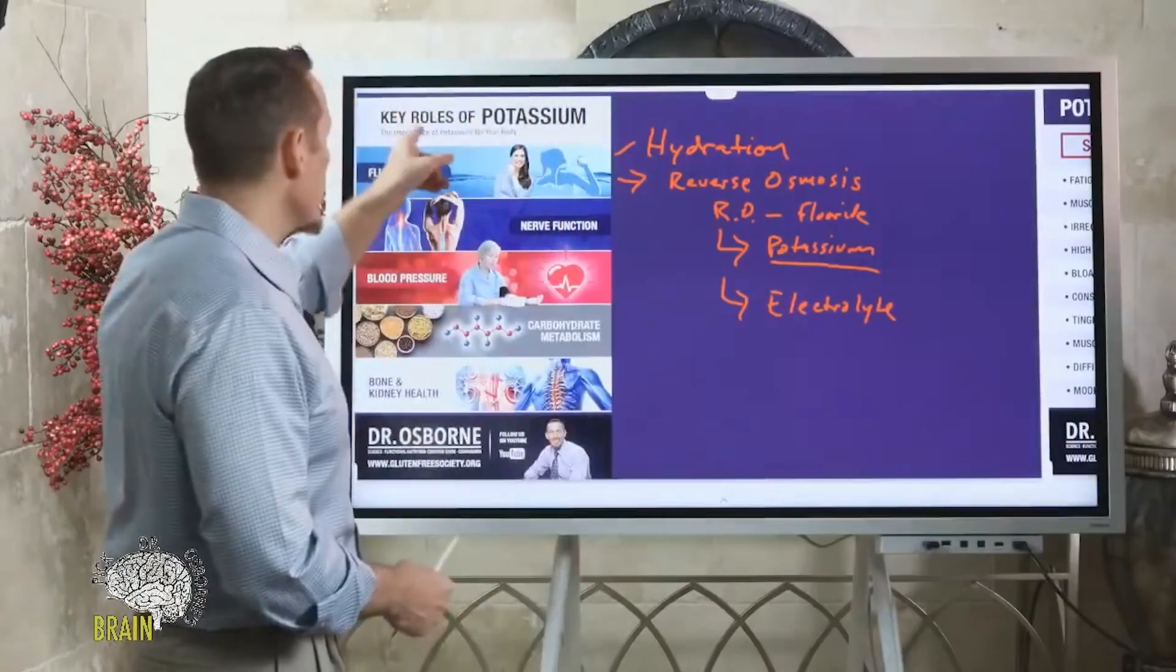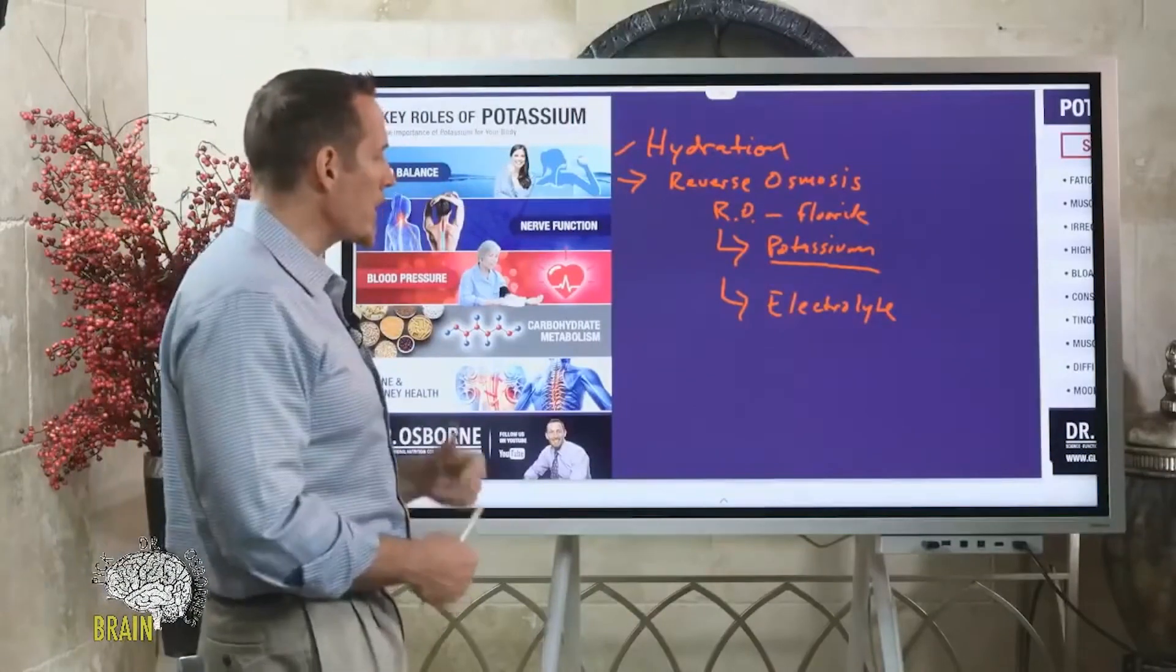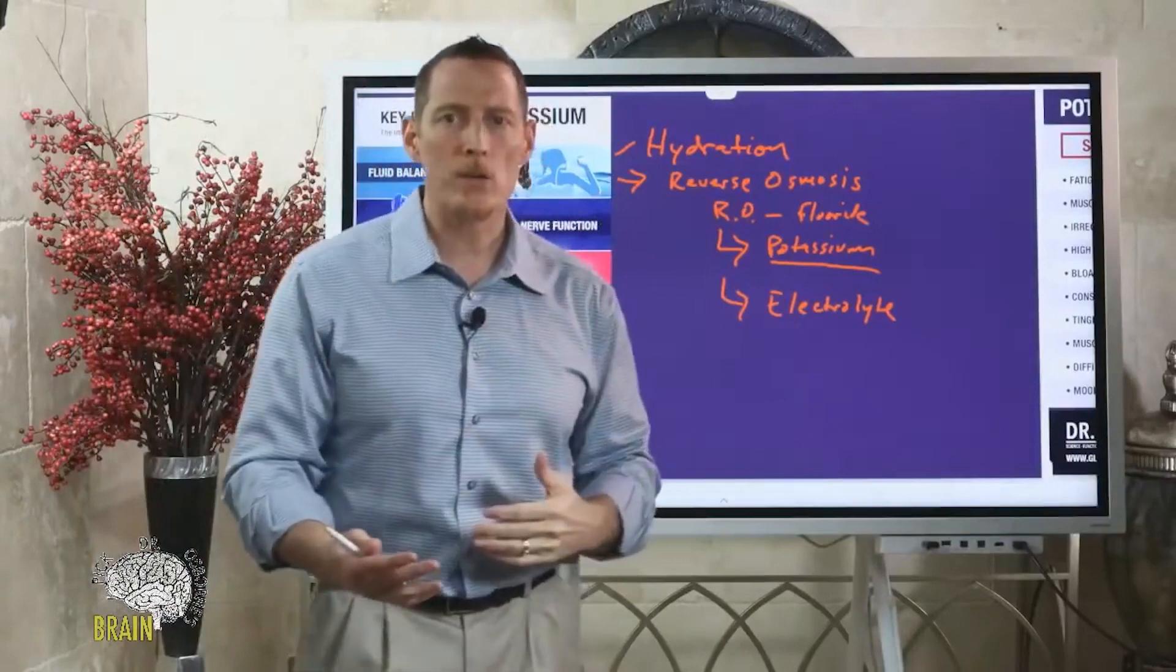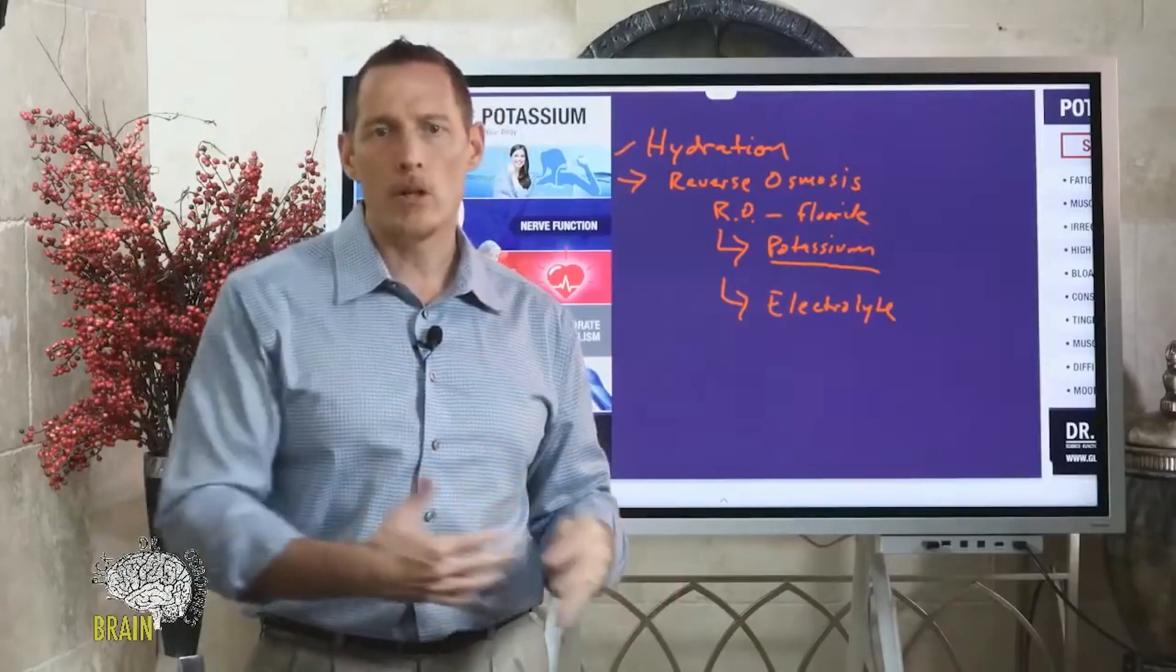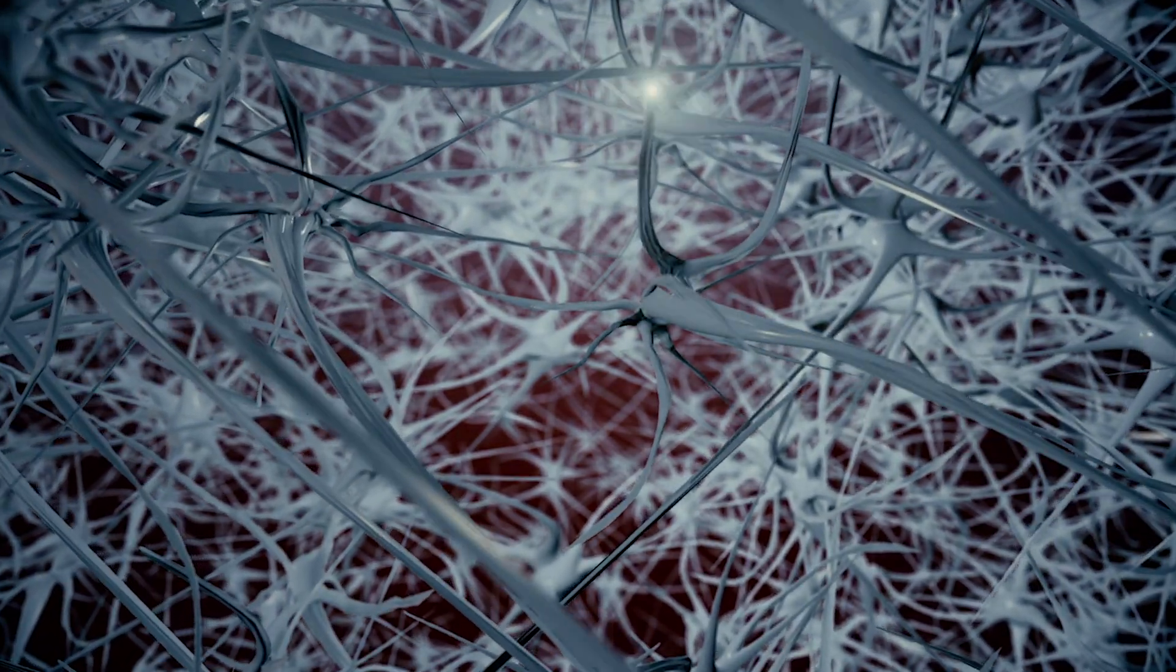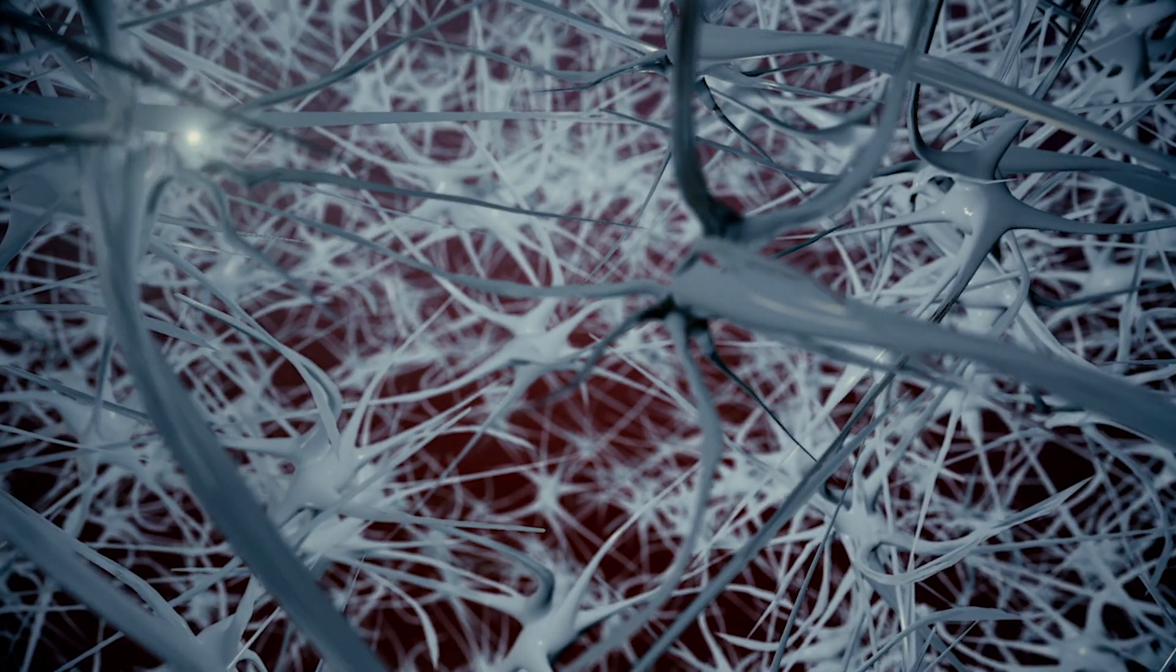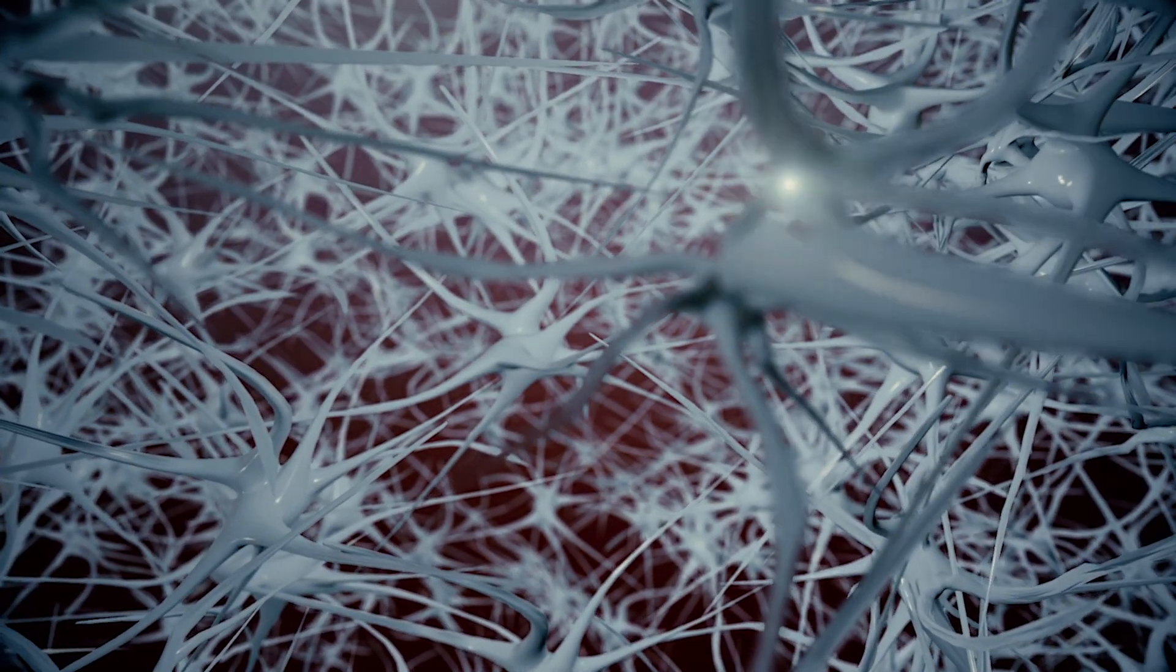Potassium plays a key role in fluid balance and nerve function. The term electrolyte oftentimes is really focused on fluids and hydration, but the term electrolyte also refers to these minerals that help to balance how well your nerves can communicate with each other. Your potassium and your sodium play this interchange between cell membranes to allow your nerves to properly function.